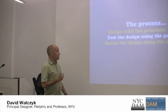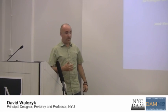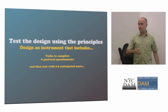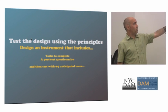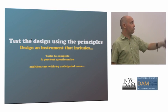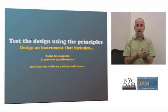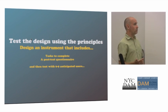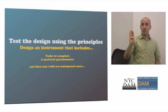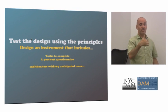The next step is testing the design using the principles — just doing a quick usability study. Unless you're building for NASA, air traffic control, or a nuclear power plant, all you need is a laptop running Silverback, a $90 piece of software. You identify the tasks to complete — the most important things people want to do — then create a post-test questionnaire to identify satisfaction. You only need to test with six to nine anticipated users; Jacob Nielsen showed you can get over 80% accuracy of design problems with just that many.